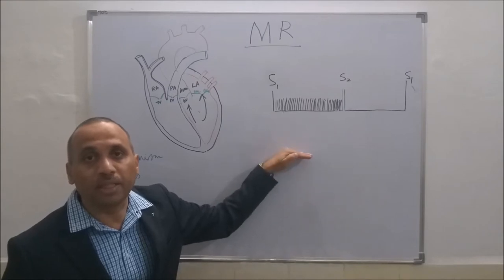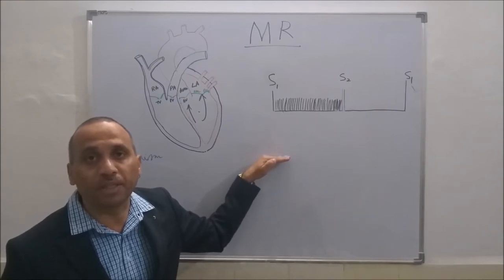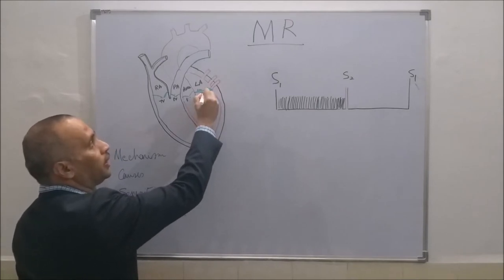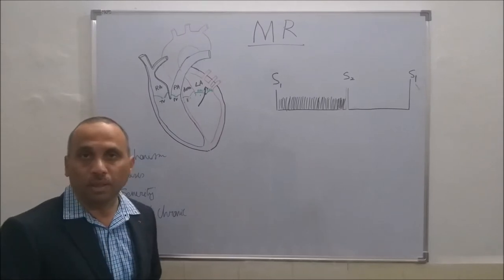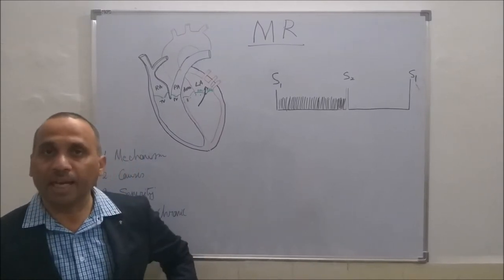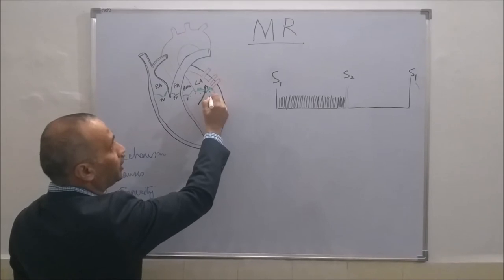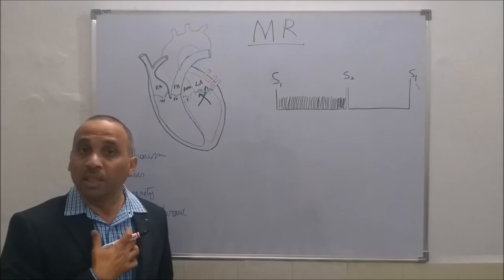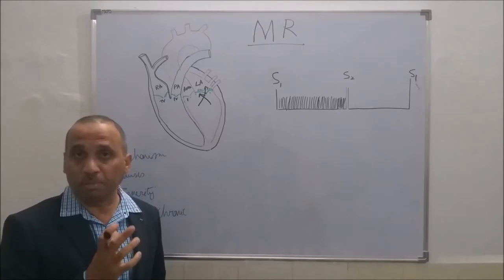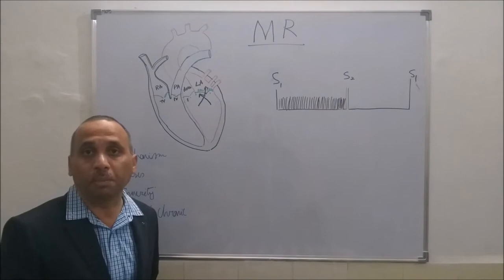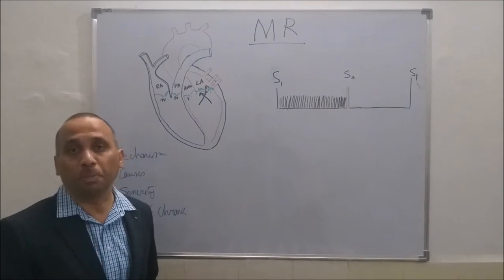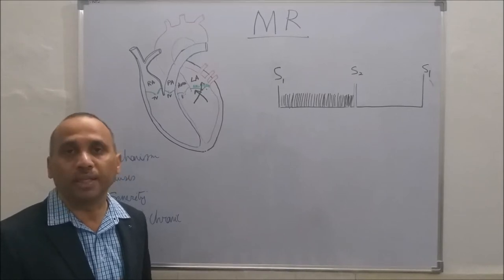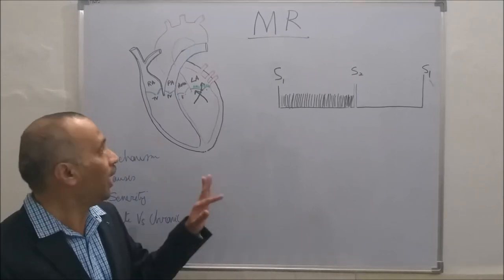Why to the axilla and back? The radiation depends upon which leaflet is involved. If the anterior mitral leaflet is involved, the jet is directed posteriorly, so you find the murmur radiating to the axilla and back. Whereas if the posterior mitral leaflet is involved, the radiation is towards the base of the heart — you can hear it in the second intercostal space. So there is a basic difference in the radiation of the MR murmur depending upon which mitral leaflet is involved. Commonly it involves the anterior mitral leaflet, and the murmur radiates to the axilla and back.